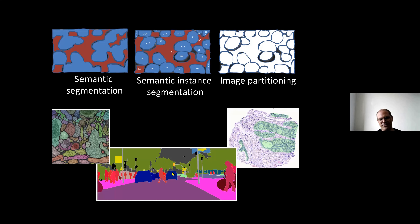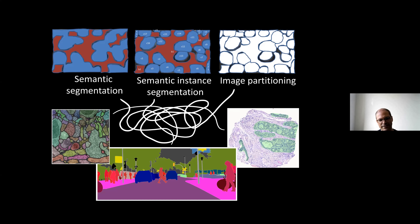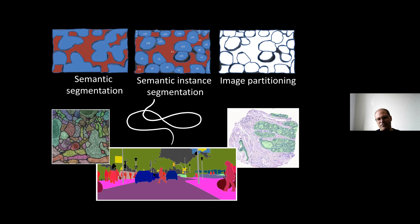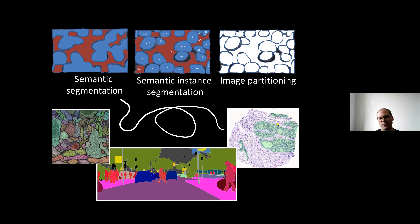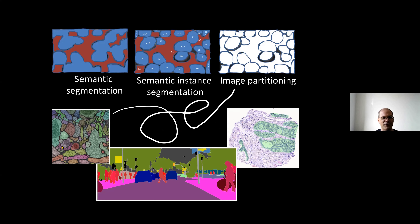The cityscapes benchmark shows an example where we delineate individual people and separate them from cars. There's also a digital pathology problem where we find which regions belong to tumor, and a connectomics problem where we decide which pixels belong to the same cell. Cityscapes is semantic instance segmentation - we distinguish between pedestrians and cars, but also between one pedestrian and the next. The tumor problem is also semantic segmentation, and the cell problem is pure image partitioning, which will be of most interest in the second half of the talk.